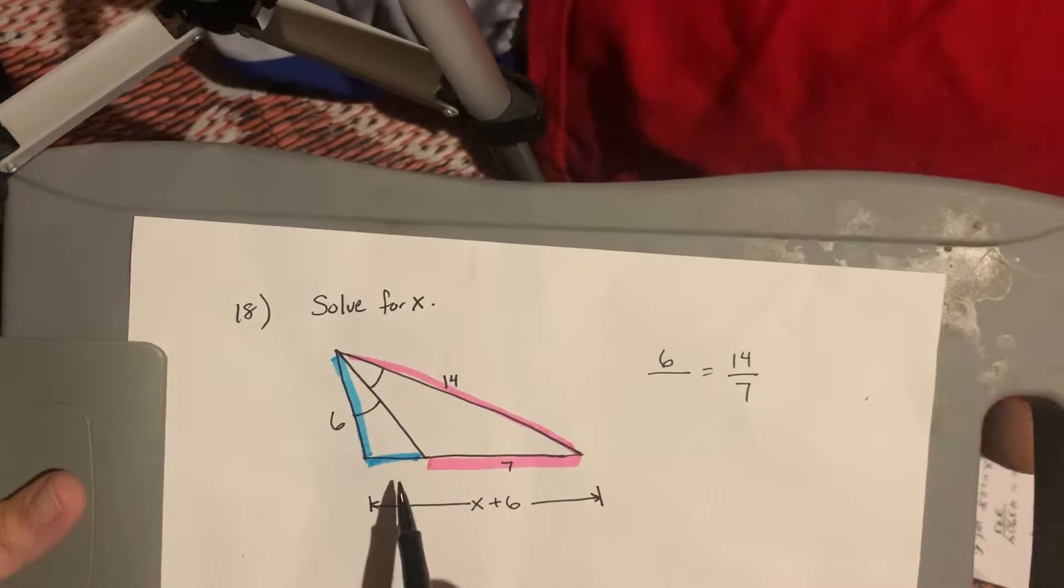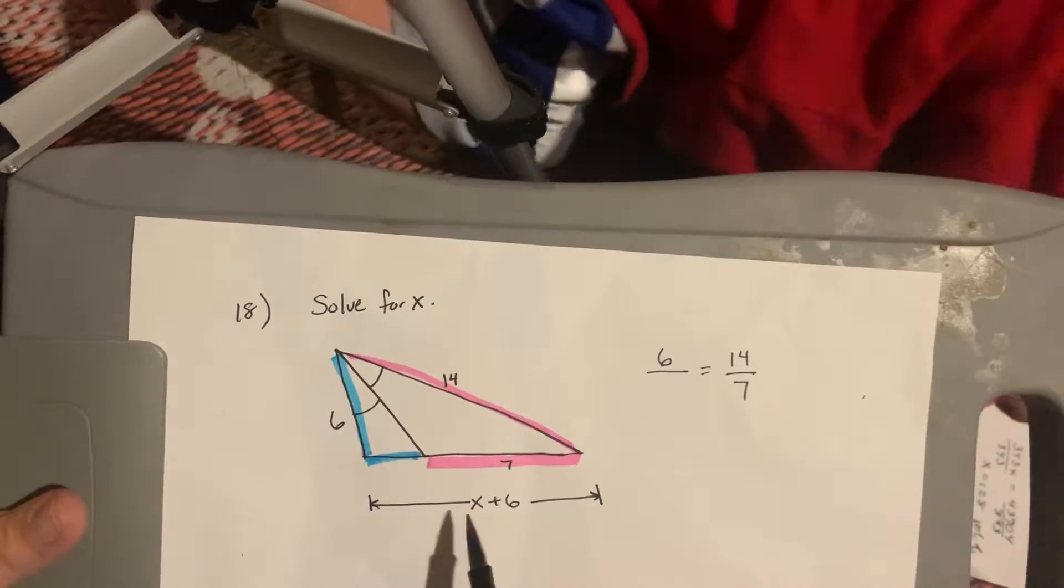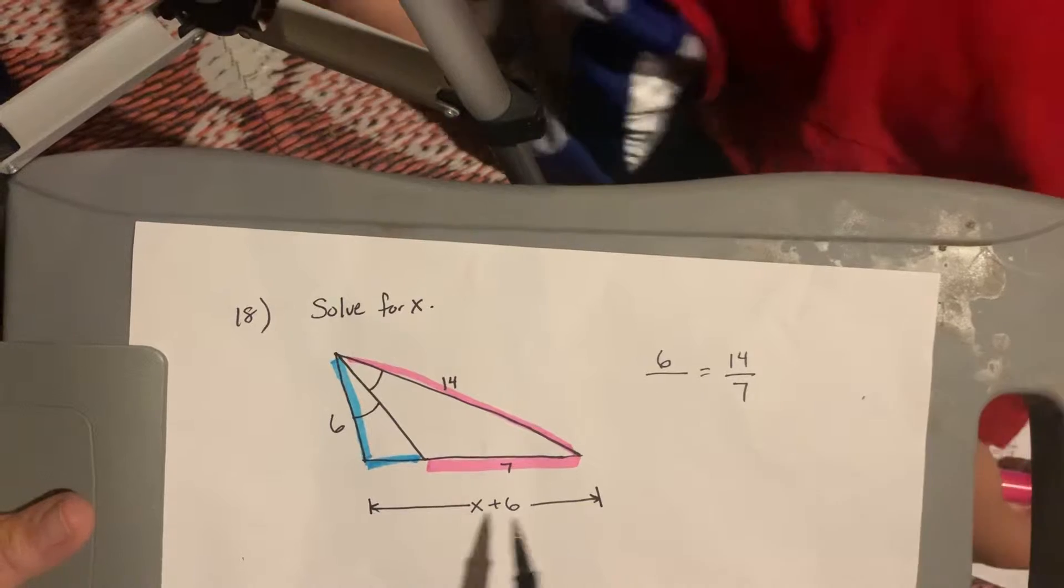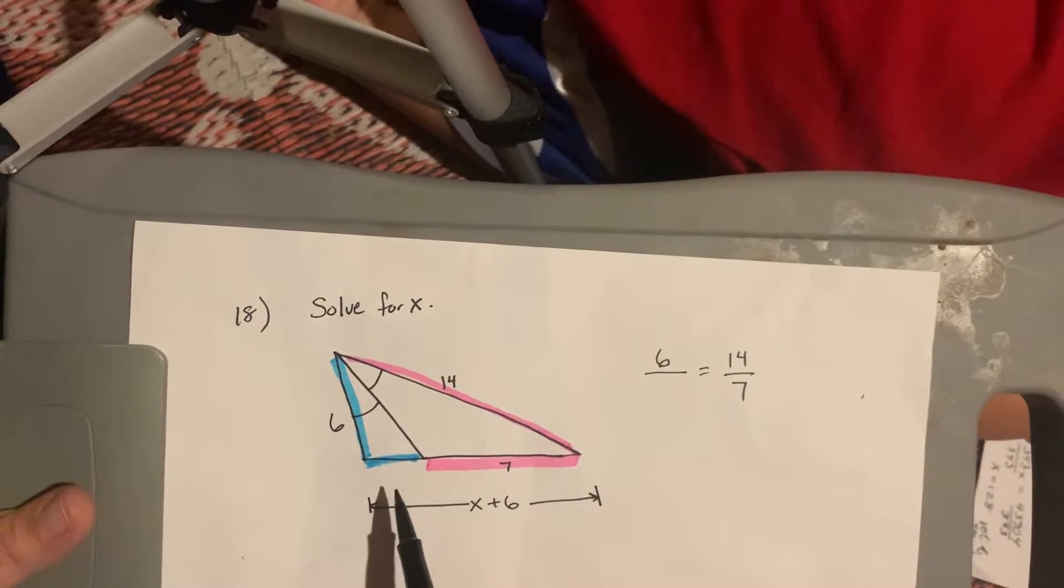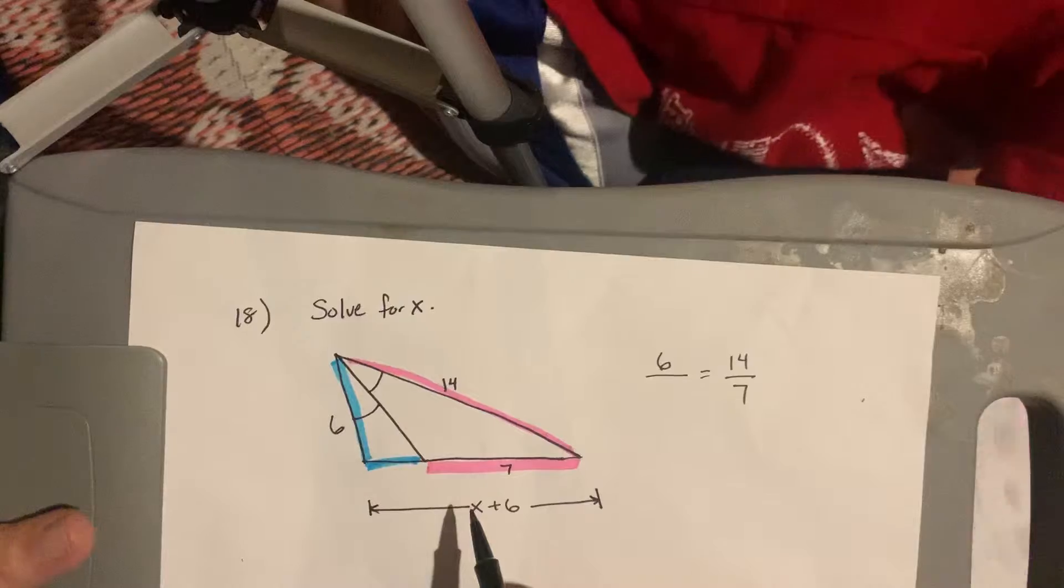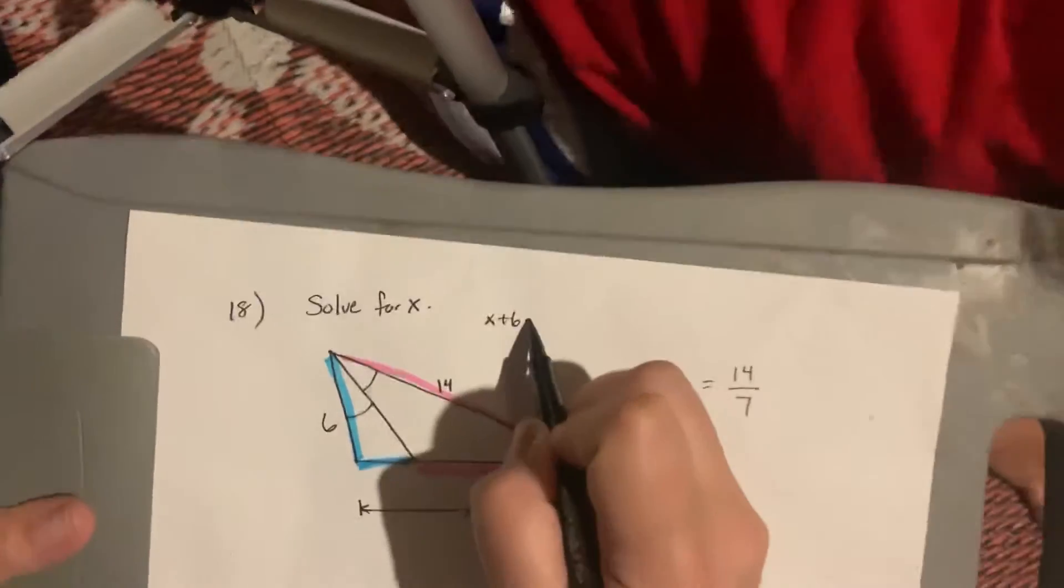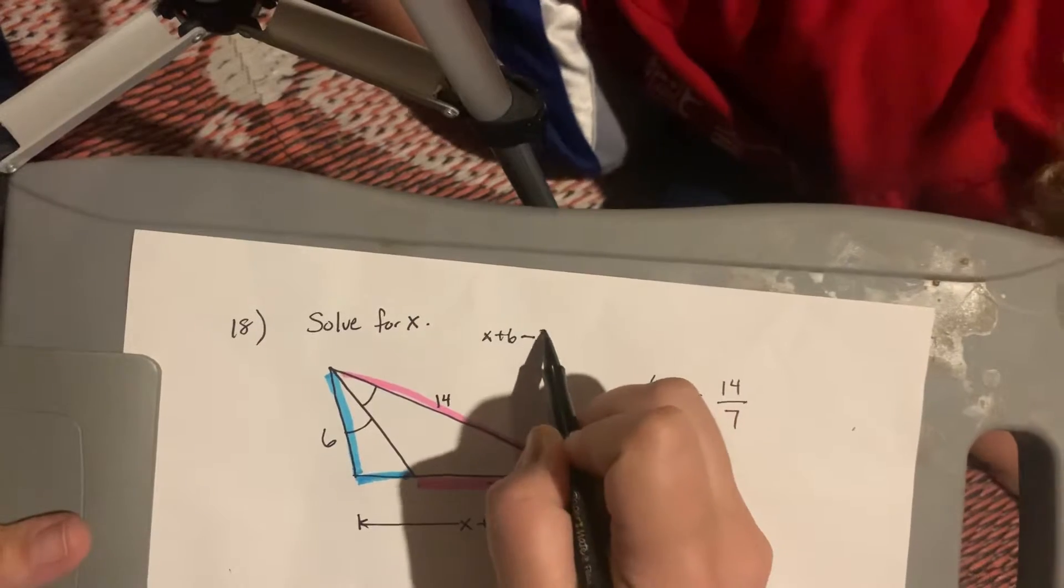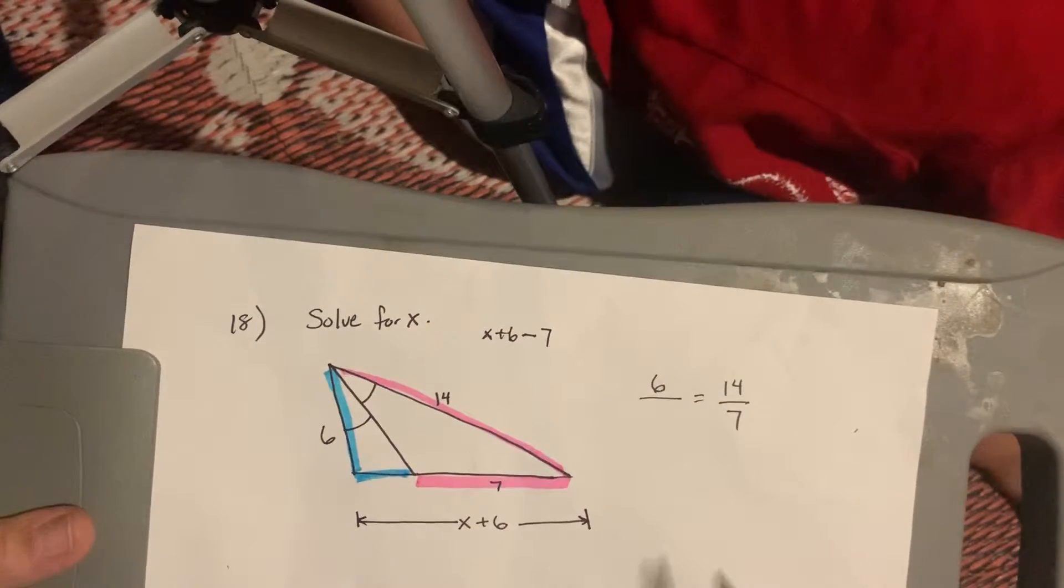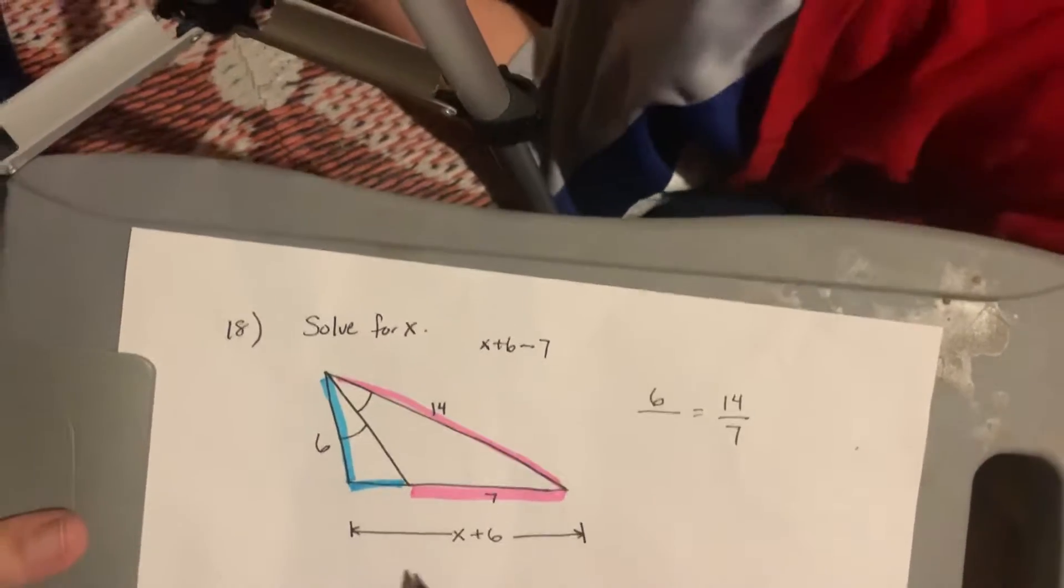So, I need to write this thing in terms of x. I know if I knew the number of the total, say the total was 20, I would do 20 minus 7 and get 13. But, I don't know the total. I know the total is x plus 6. So, I need to do x plus 6 minus 7 because I need to subtract the 7 from this total here.